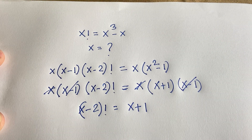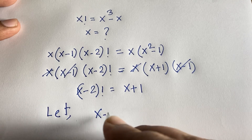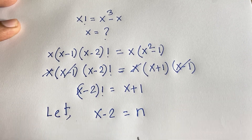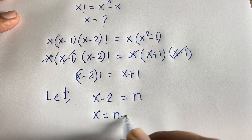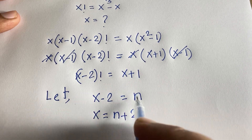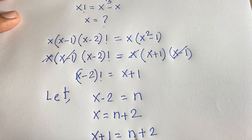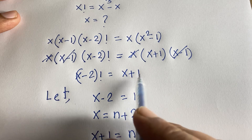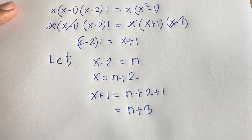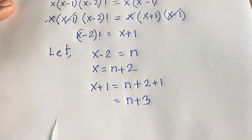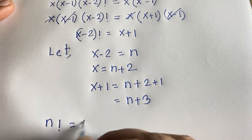Now at this moment, if you think here x minus 2, let x minus 2 equal to n. So in this case, x will be n plus 2. So x is n plus 2. So x plus 1 is equal to n plus 2 plus 1, which will be n plus 3. So x minus 2 factorial will be n factorial, is equal to x plus 1, which will be n plus 3.